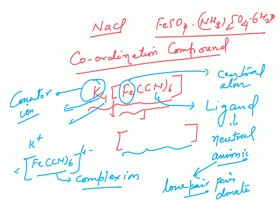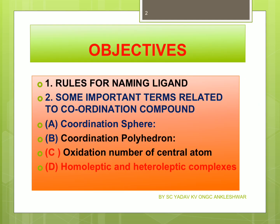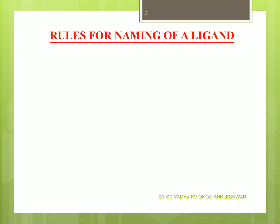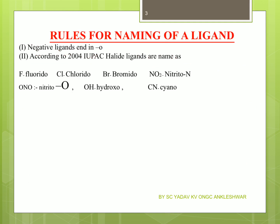Now you understand that to study coordination compounds, we must identify the ligand and know how to write its name. So first: Rules for naming of a ligand. A ligand can be a negative ion. For all negatively charged ions, what do you add at the end? Negatively charged ions will be anionic ligands, and these ligands end in 'O'. For example: if fluorine → fluorido, chlorine → chlorido, bromido.